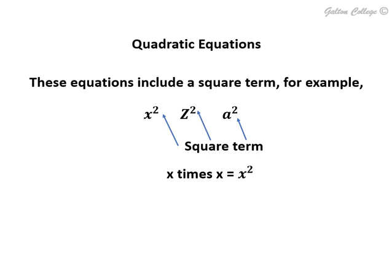It's x times x is x squared, that's what it means. x multiplied by itself gives us a square. z multiplied by z is z squared, and a multiplied by a is a squared.